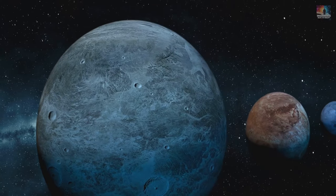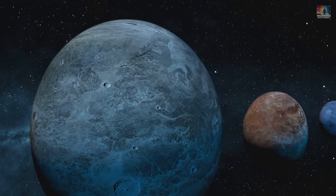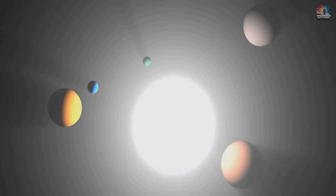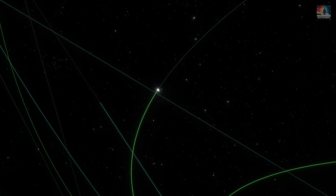There's another one called Proxima b, which is circling around a star called Proxima Centauri. This star is part of a group with two other stars, making it a triple star system.